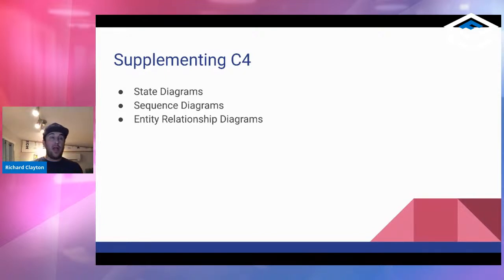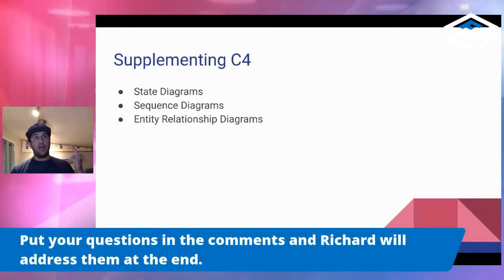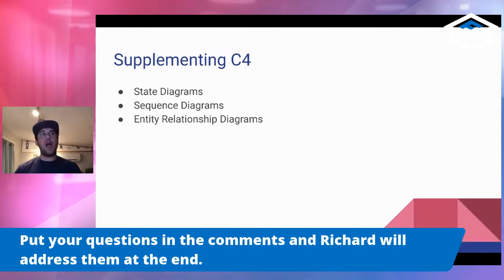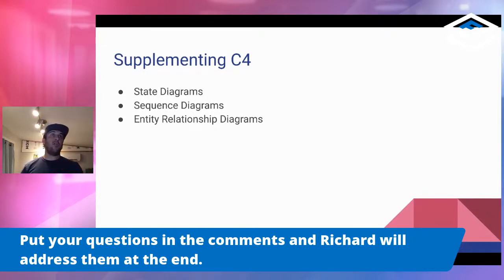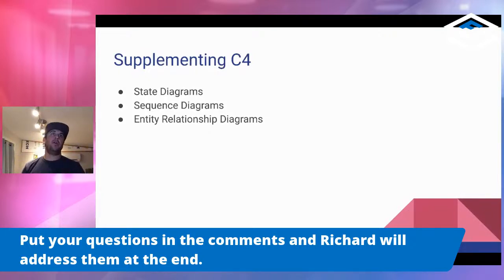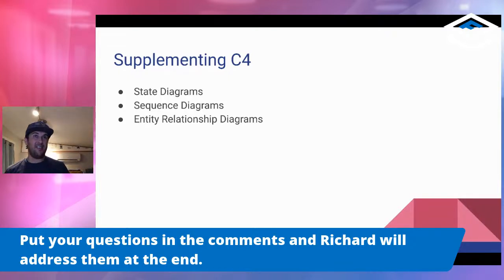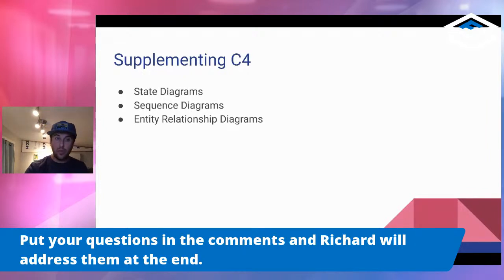Simon talks about C4 having these four different levels — context, container, component, and code. But in addition, he says you need to supplement those diagrams because they're not going to capture everything. Those diagrams are fairly static — they show the layout of the system, here are components interoperating or here are services and what they generally do. But they don't show a sequence of events, the data model, or a state machine and how it changes over time. So I want to show you three specific charts: state diagrams, sequence diagrams, and entity relationship diagrams, and how they can be used to help you diagram architecture.